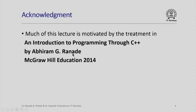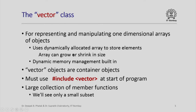Much of this lecture is motivated by the treatment in the book An Introduction to Programming through C++ by Abhiram G. Ranade, published by McGraw-Hill Education in 2014. Recall that the Vector class is basically used for representing and manipulating one-dimensional arrays of objects, and it uses dynamically allocated arrays to store the elements. The arrays can grow or shrink in size — we could resize a vector dynamically during execution of a program, and all of the dynamic memory management is built in. That is why it is very convenient to use the Vector class as opposed to a user-defined array.